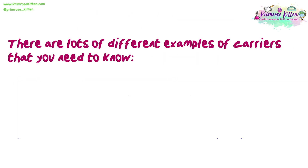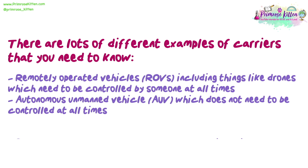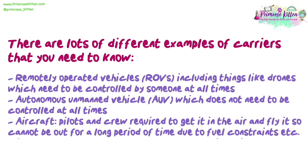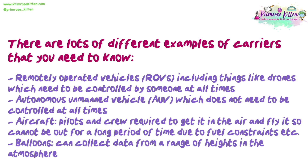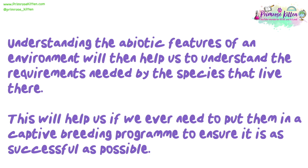There are lots of different examples of carriers that you need to know. Remotely operated vehicles (ROVs), including things like drones, which need to be controlled by someone at all times. Autonomous unmanned vehicles (AUVs), which do not need to be controlled at all times. Aircraft, which require pilots and crew and cannot be out for a long period of time due to fuel constraints. Balloons, which can collect data from a range of heights in the atmosphere. Understanding the abiotic features of an environment will help us understand the requirements needed by the species that live there, and will help us if we ever need to put them in a captive breeding programme.